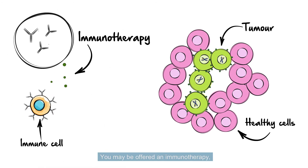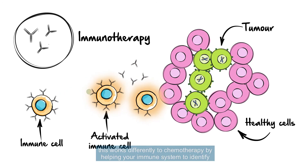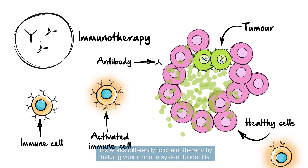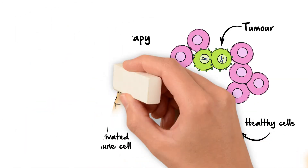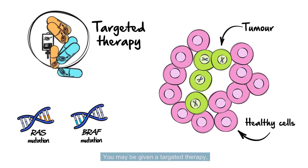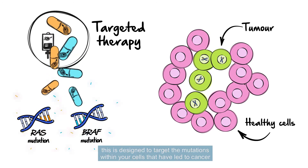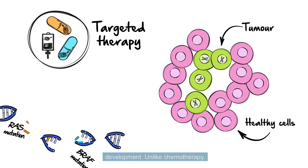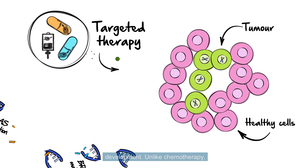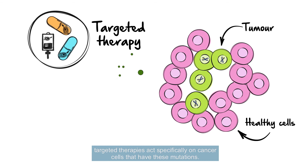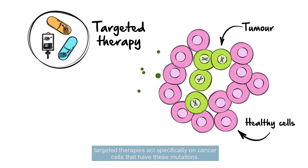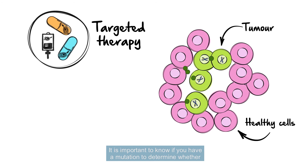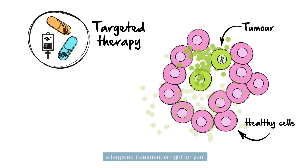You may be offered an immunotherapy, which works differently to chemotherapy by helping your immune system to identify and kill the cancer cells. You may be given a targeted therapy, designed to target the mutations within your cells that have led to cancer development. Unlike chemotherapy, targeted therapies act specifically on cancer cells that have these mutations. It is important to know if you have a mutation to determine whether a targeted treatment is right for you.